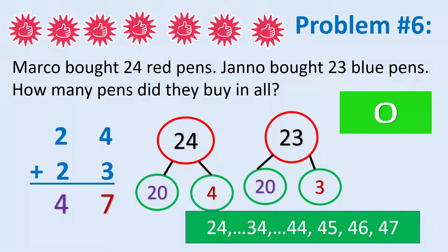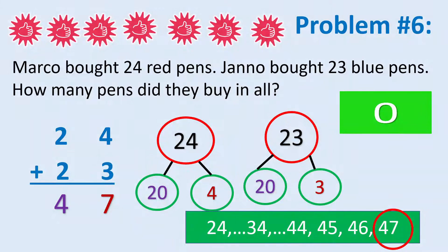We can count on from 24 by 10: 24, then 34, then 44. That means we added 10 twice. Then we continue adding 3 more: 44, 45, 46, 47. That's the answer — 47 in all!